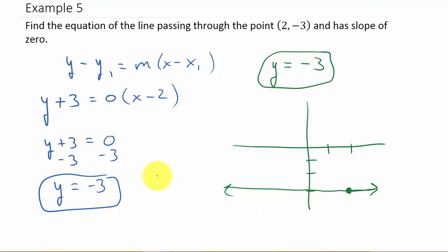But if they give you a point that it's passing through, and they tell you the slope is 0, well, it's a horizontal line, so it's y equals whatever the y coordinate is.